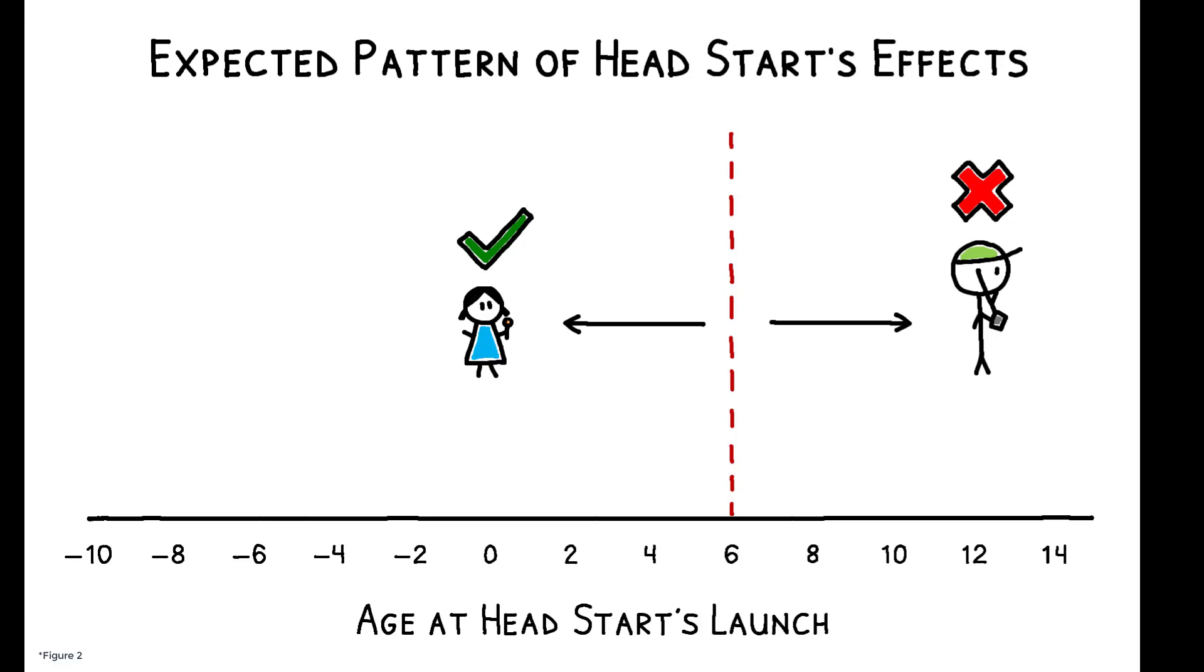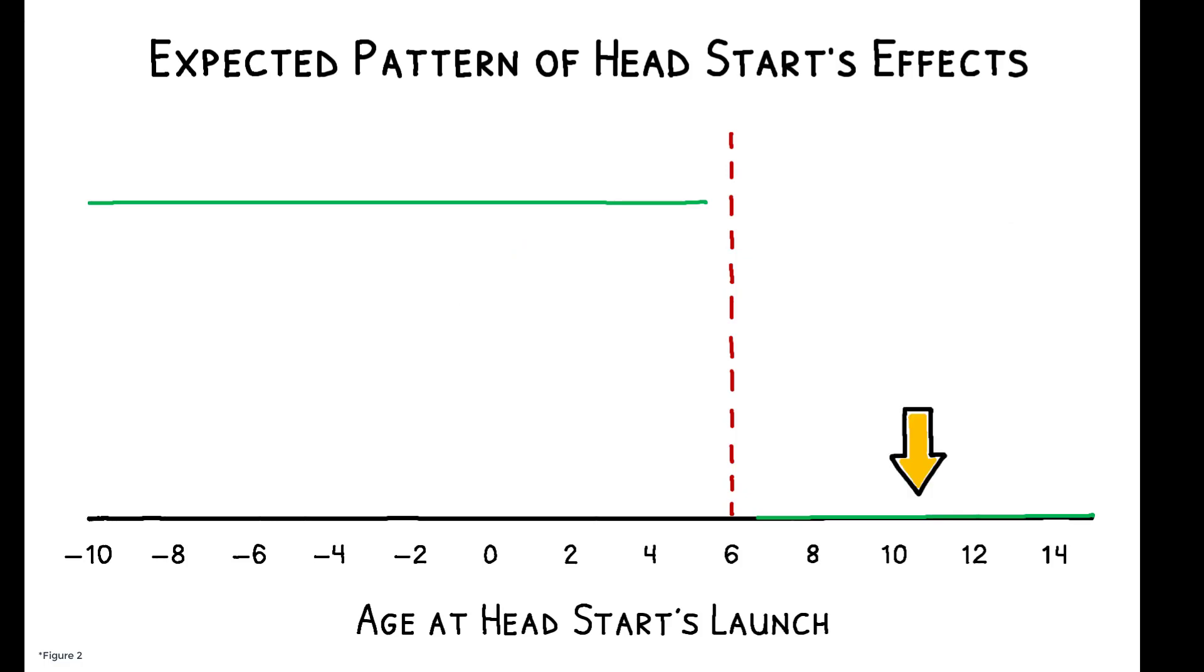If the program has a positive, causal impact on adult outcomes, we might see a pattern like this: zero effect on older children, and a level shift for younger children.